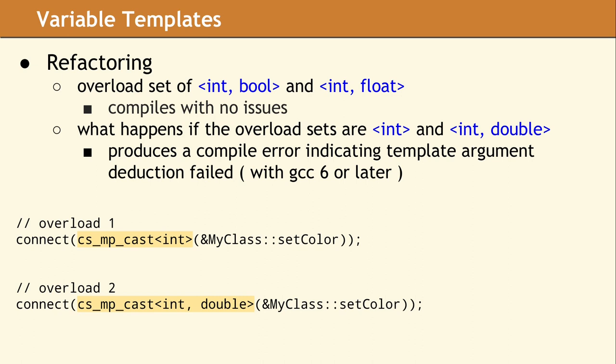Now suppose we change the overload set. One overload is int and the other overload is int comma double. This combination fails to compile with GCC, and the error message says template argument deduction failed.